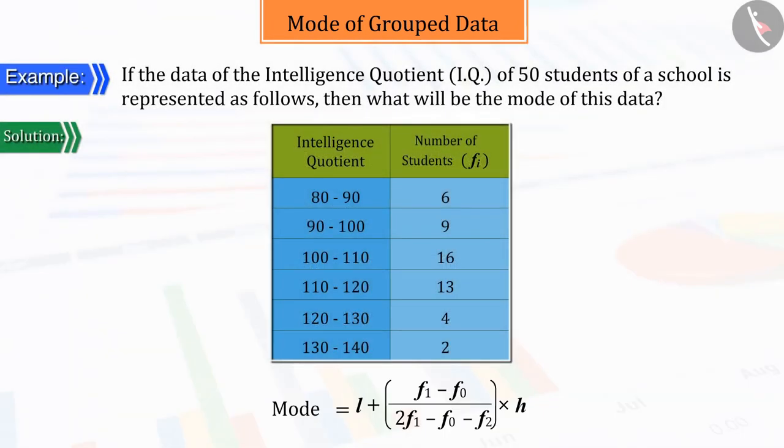Therefore, the maximum number of students here is 16. So, the class interval is 100 to 110.